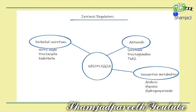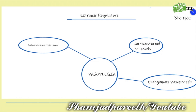The intrinsic regulators include: first, endothelial secretions like nitric oxide, prostacyclin, and endothelin; second, autocoids such as serotonin, prostaglandins, and thromboxane A2; and third, vasoactive metabolites such as acidosis, hypoxia, and hydrogen peroxide. The extrinsic regulators include catecholamine resistance, corticosteroid response, and endogenous vasopressin.